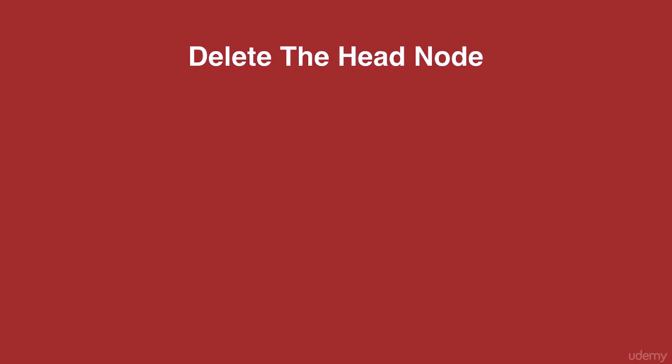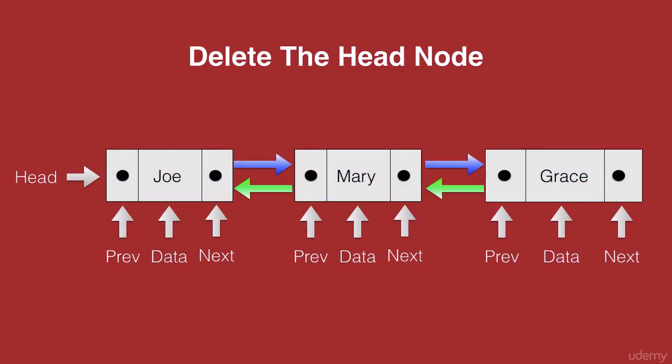In this lecture, you will learn how to delete the head node of a doubly linked list. We have an example of a doubly linked list with three nodes: the head node with the data Joe, second node with the data Mary, and third node with the data Grace.